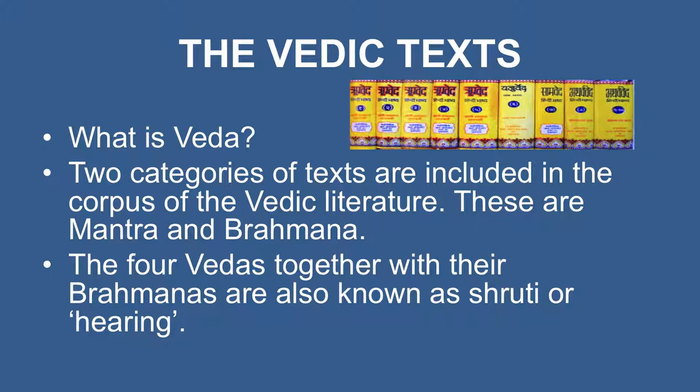The Mantra category forms the core of the Vedic text and has four separate collections: the Rig Veda, the Sam Veda, the Yajur Veda, and the Artha Veda. The Brahmanas, not to be confused with the Brahmanical class, are prose tracts containing the explanation of the mantras as well as the sacrificial rituals. The four Vedas together with their Brahmanas are also known as Shruti, or 'that which was directly heard by the Sages.'